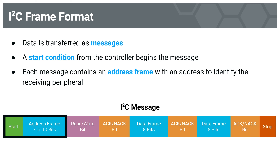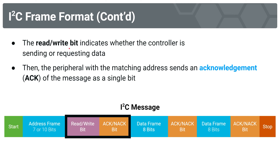The next part of the message is a read/write bit, indicating whether the controller is sending or requesting data from the peripheral — the controller runs the show. The peripheral with the matching address then sends an acknowledgment, called an ACK. A not-acknowledged response is called a NACK. This ACK bit is the peripheral's confirmation that it has received the read/write bit and knows whether it will be sending data to the controller or waiting to receive data.